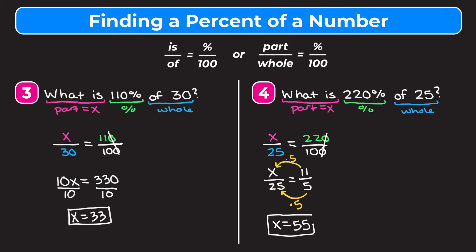If you prefer to cross multiply, you could also do that: 5 times X equals 25 times 11, which is 275. Then divide both sides by 5 and you get the same answer that X equals 55.